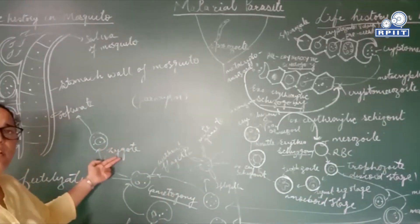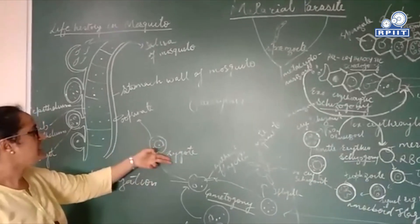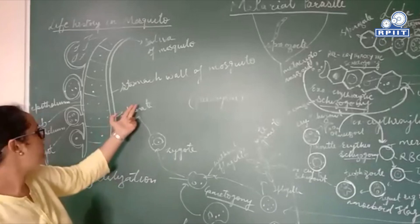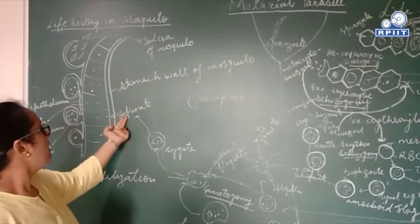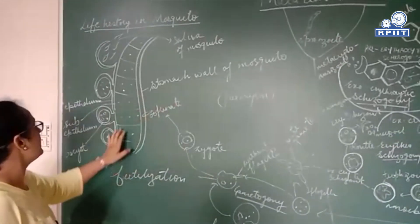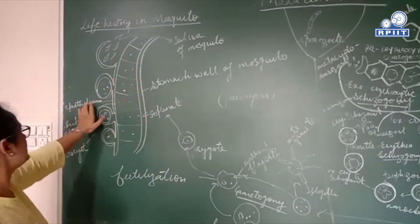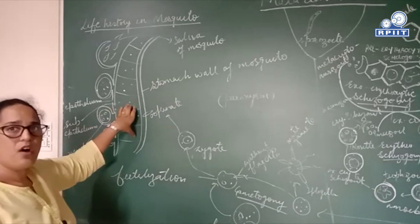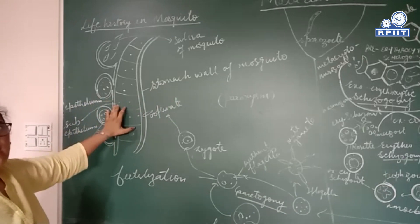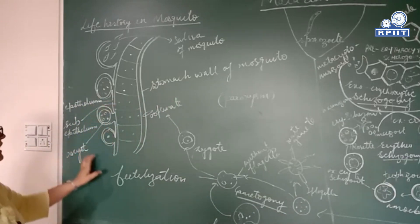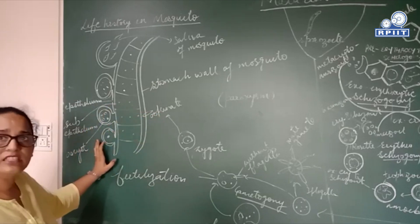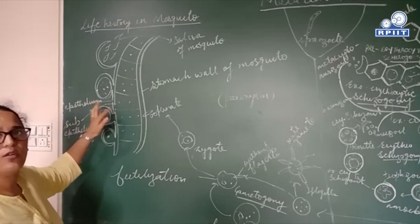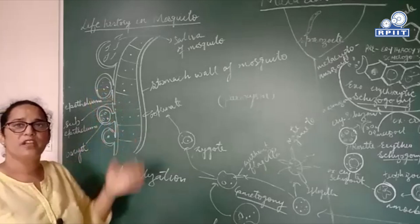Due to fertilization, a zygote is formed. This zygote is rounded in shape, but it will take a spindle shape pointed at both ends, becoming an ookinete. Here we can see the epithelial and sub-epithelial surfaces — these are the cells of the mosquito gut. The ookinete enters the space between the epithelial and sub-epithelial lining of the mosquito's cells. It then forms a cyst around itself, and after that, nuclear division occurs. It undergoes multiple divisions, leading to the formation of millions of sporozoites.